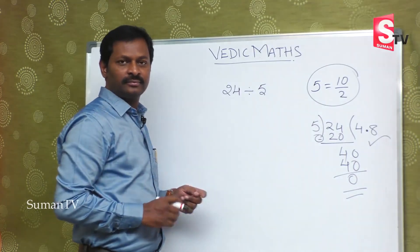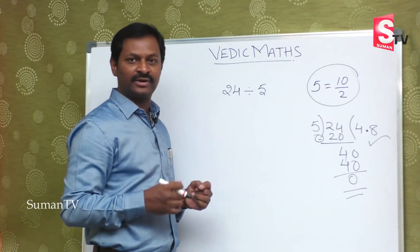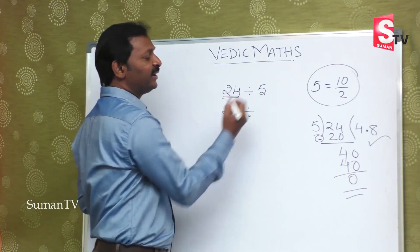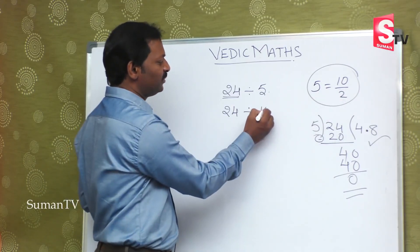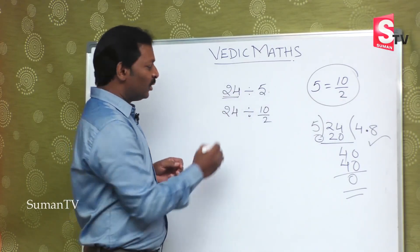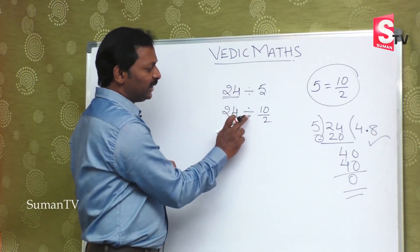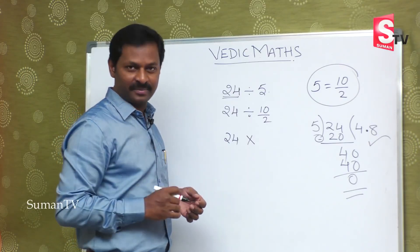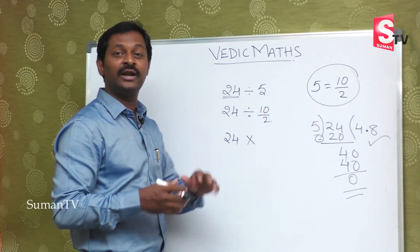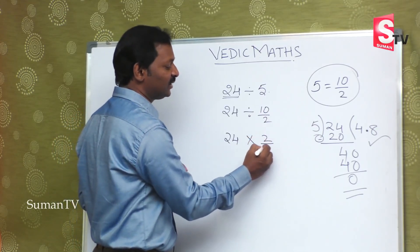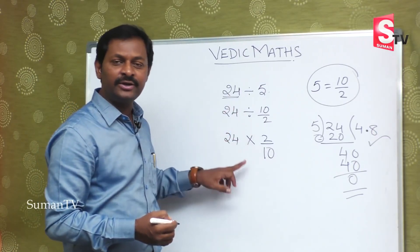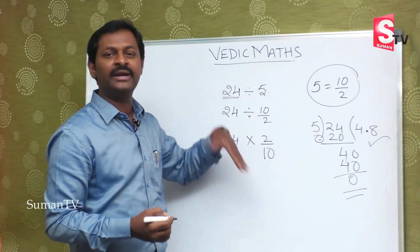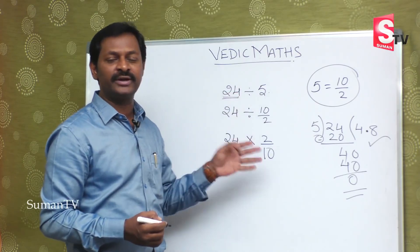Now, twenty four divided by five — let me first explain the mental calculation method. As it is, write twenty four divided by five, and convert five to ten by two. Next step: convert this division into multiplication. We will get the reciprocal of the number. Reciprocal means ten by two becomes two by ten — it reverses. Division becomes multiplication; numerator will become denominator, denominator will become numerator. So ten by two becomes two by ten.